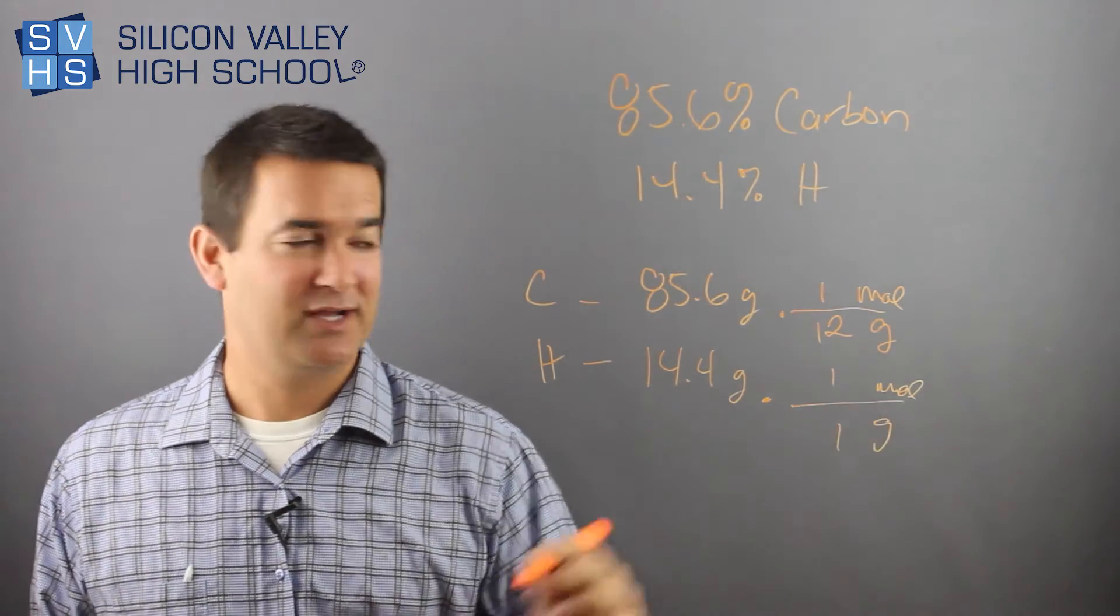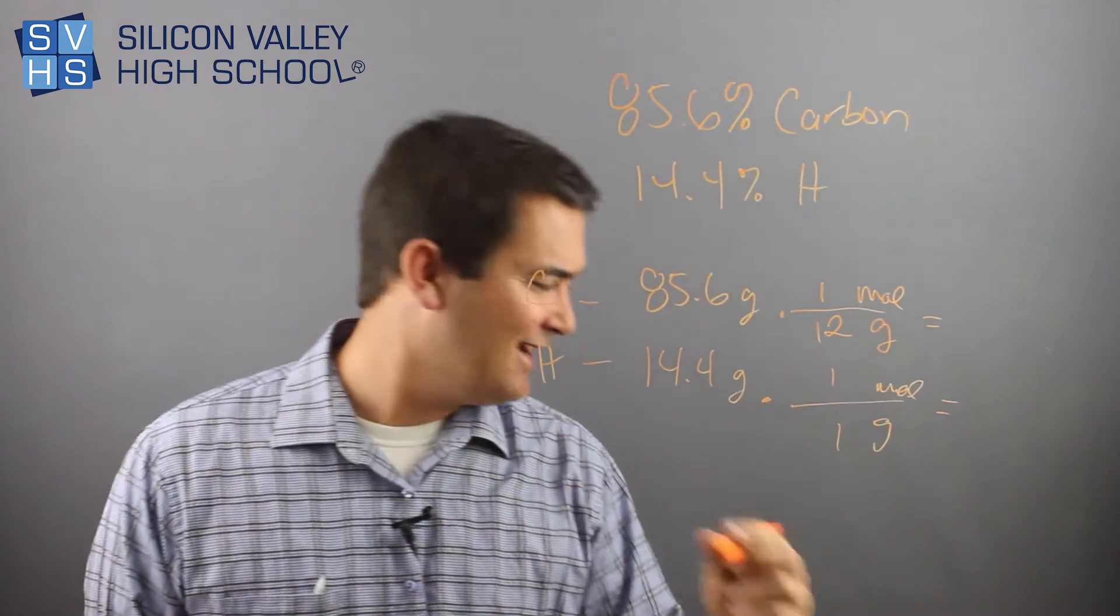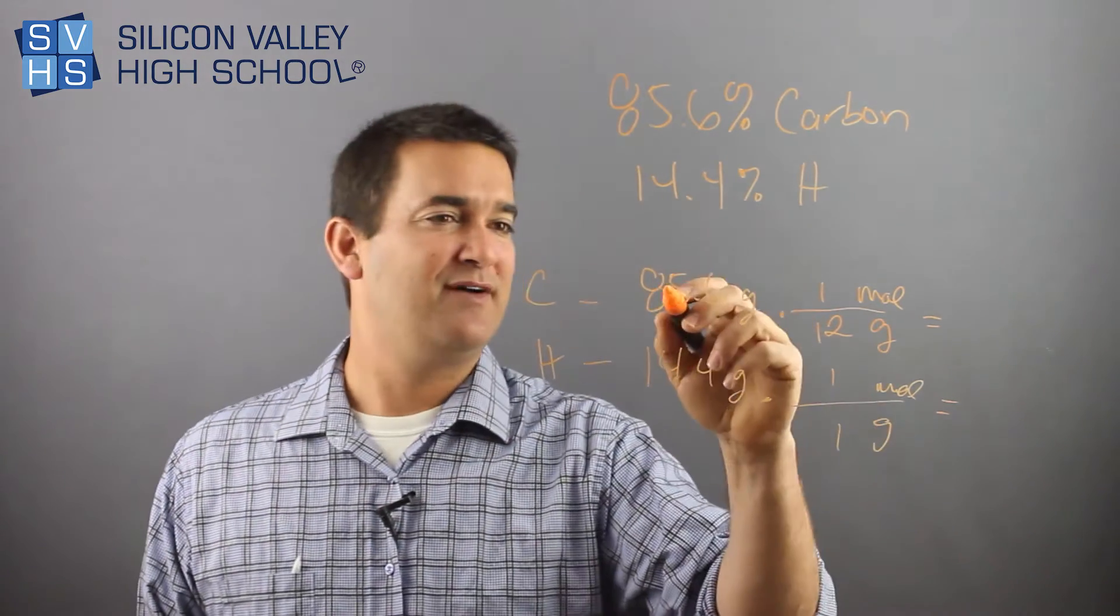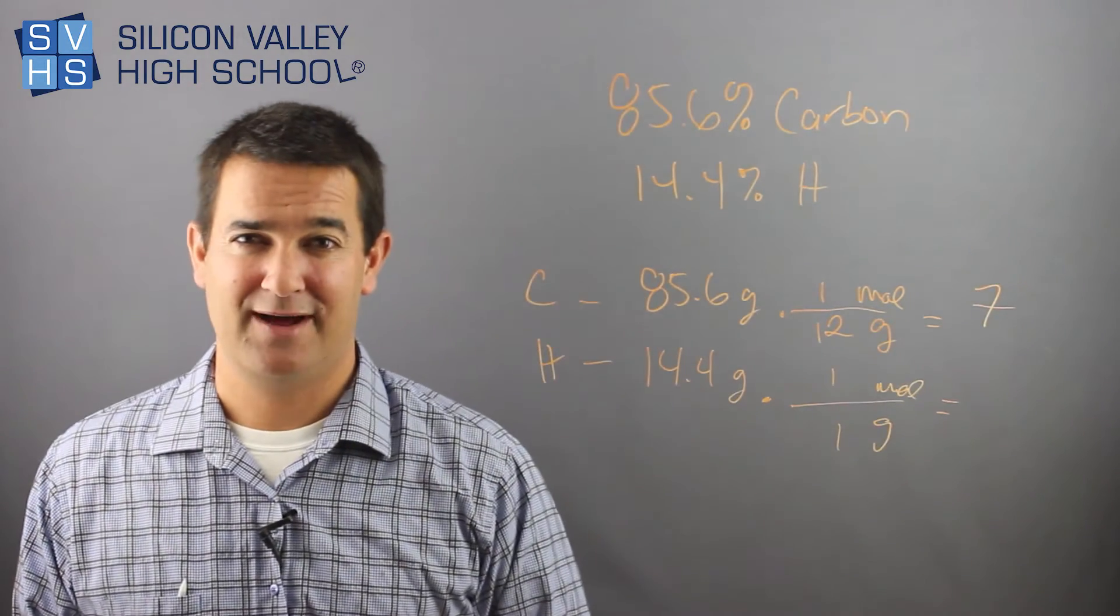Again, you find that on the periodic table and hydrogen is one gram per mole. So we're getting there. We're going to convert each into moles. I did this problem earlier and I think I got, let me look at my notes. When you divide 85.6 by 12, you get roughly seven, pretty close to seven on the dot.